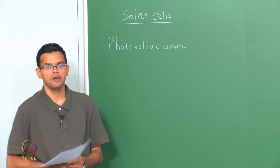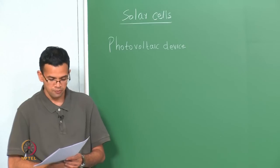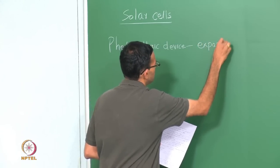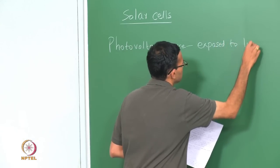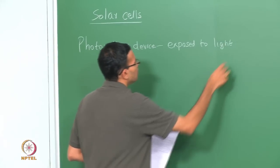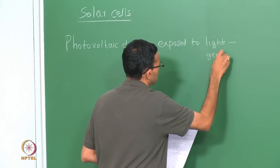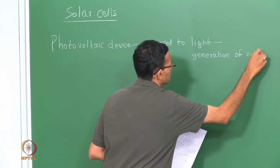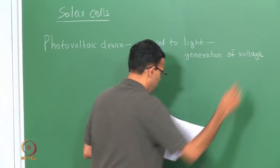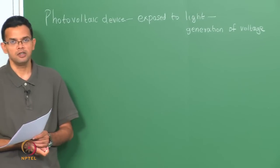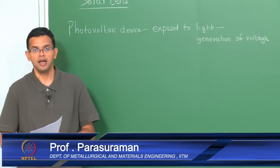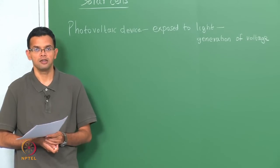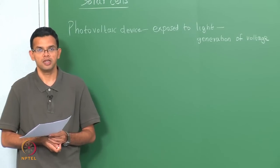A photovoltaic device is one where you have a generation of voltage when exposed to light. Photovoltaics were first discovered by Henry Becquerel in 1839, but the first silicon-based PN junction photovoltaic was invented by Ohl in 1940.